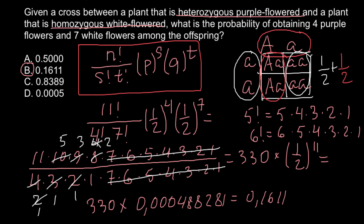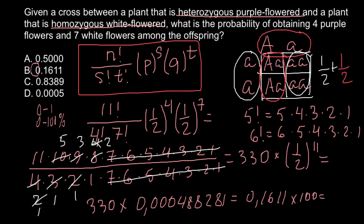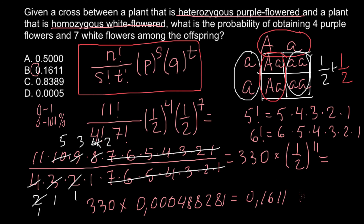If you need the answer as a percentage — this number is given on a scale between 0 and 1 — you just multiply by 100 to get the answer on a scale of 0 to 100 percent, which gives 16.11 percent. But today's answer is given on the 0-to-1 scale, so that is our answer. Thank you for your attention. Please subscribe for my new videos, which I post almost every day. Thumbs up if you like this video, write your comments and questions, and see you in the next video, goodbye.